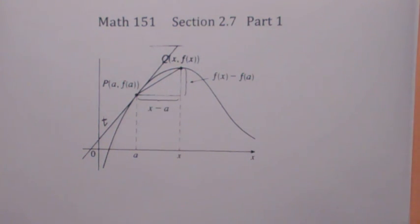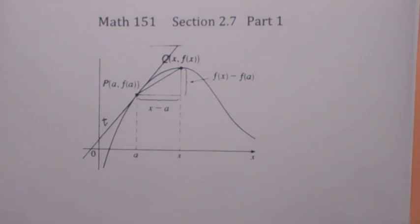In this first part one, we're going to define what the slope of the tangent line means using limits and we'll look at some interpretations of the slope of the tangent line. Then in part two we'll look at some more specific examples.